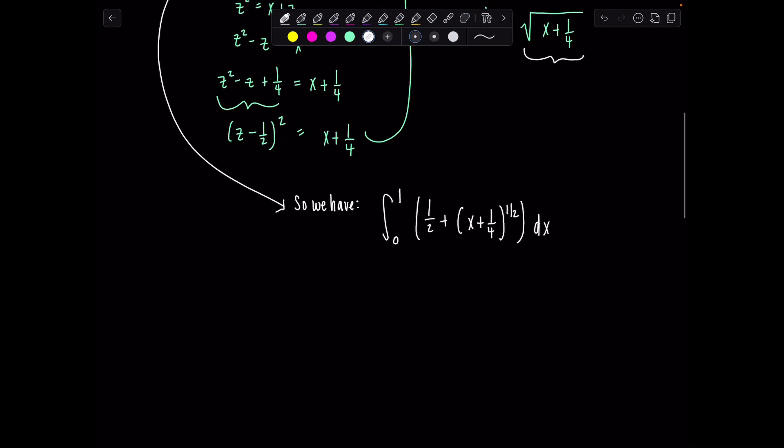And then we'll just integrate term by term. So we'll have 1 half x plus, and then add 1 to the exponent, divide by the new exponent, so we'll be left with 2 thirds x plus 1 fourth to the 3 halves evaluated from 0 to 1.